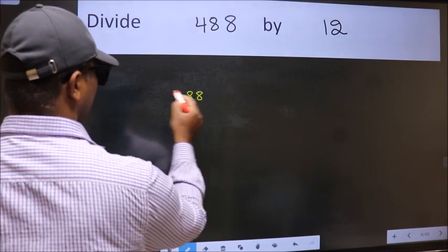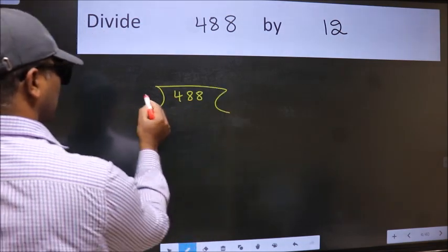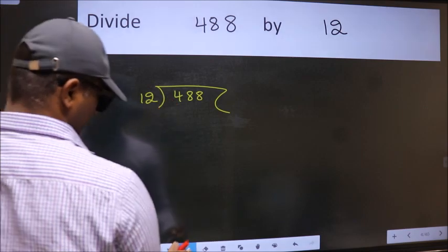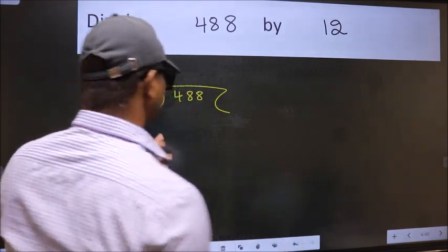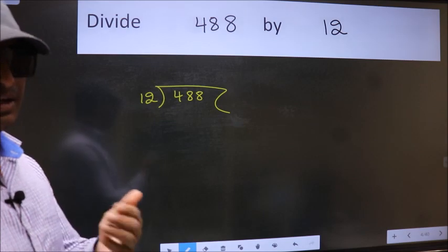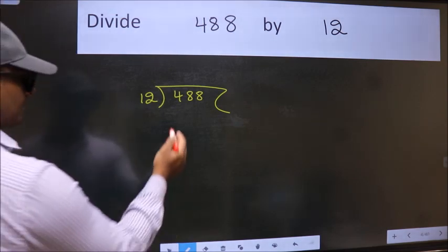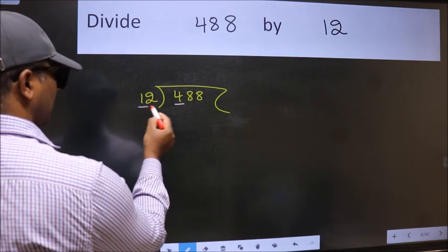488 here, 12 here. This is your step 1. Next, here we have 4 and here 12.